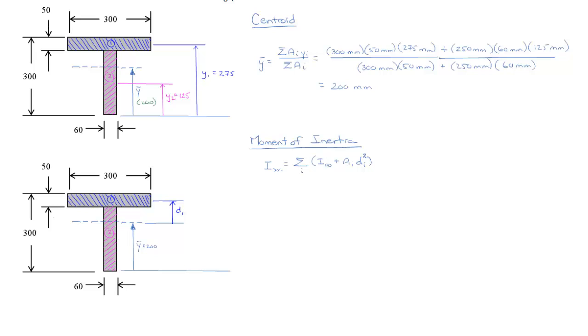I'll then go down, find the centroid of area 2, and label its distance d2 between the centroid of the composite section and the centroid of the individual section.